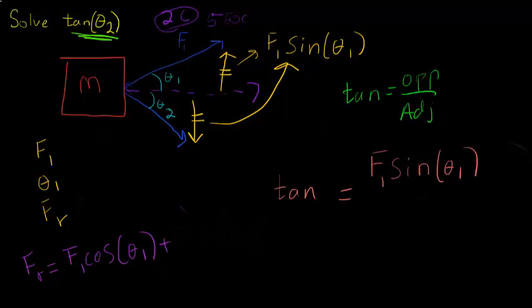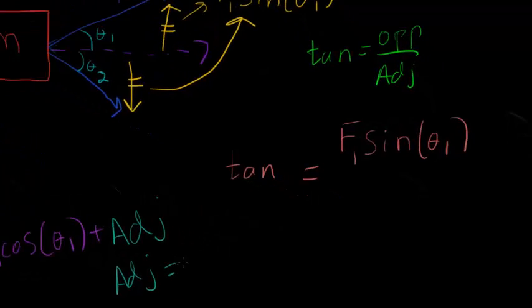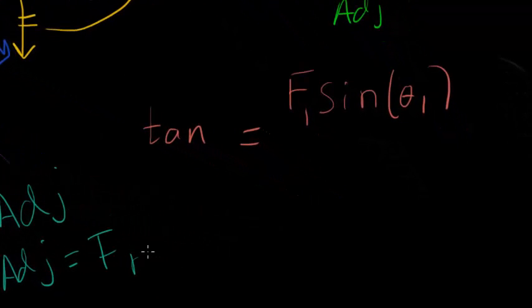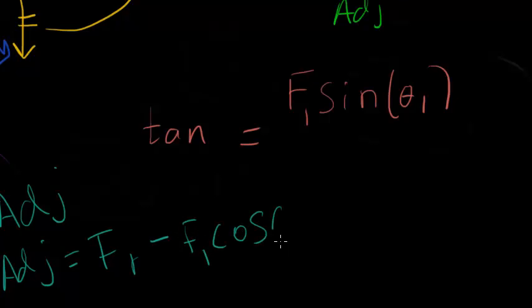Another name we can call this, we can just call this the variable adjacent because that's what it is, right? Well, now I just got to solve for it. Basic algebra here. So, now I know that the adjacent is equal to FR minus F1 cos(theta1).